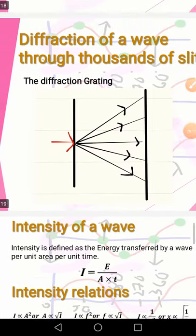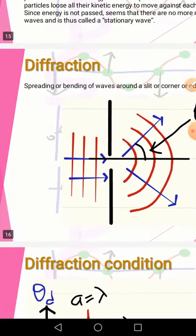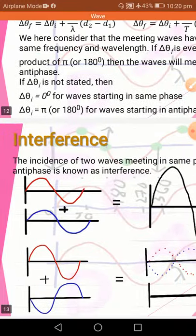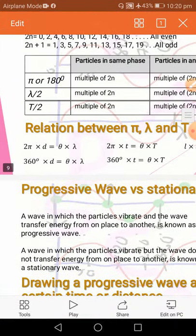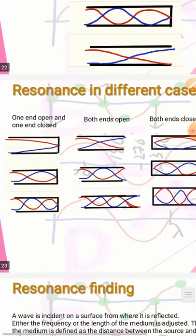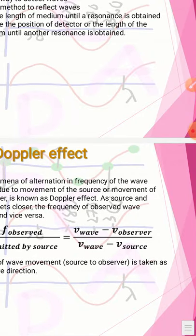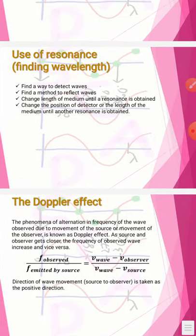So those are the intensity relations. We have learned: intensity relations, diffraction grating, conditions for diffraction, Doppler effect, resonance — and I think that is the end of our waves section for A-level. If you find any content missing, please check the Cambridge International or Cambridge A-level syllabus and inform me in the comments.